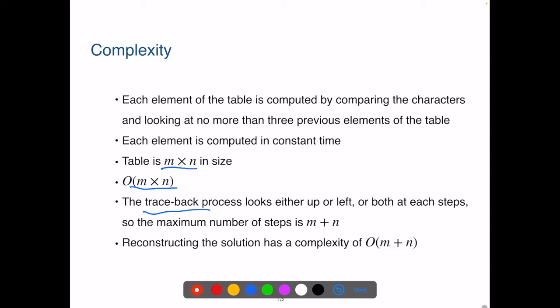The traceback also takes constant time for each step. Each step either moves up one row, leftward a column, or both. Thus, the maximum number of steps of the tracing back part of the algorithm takes big O of m plus n time. Therefore, the overall complexity of this algorithm is still big O of m multiplying n time.